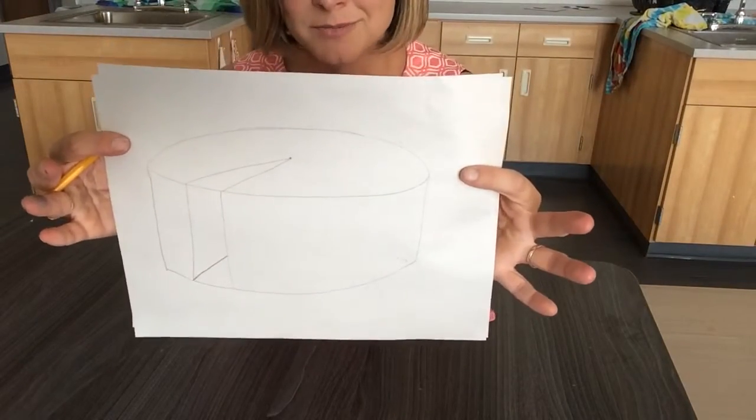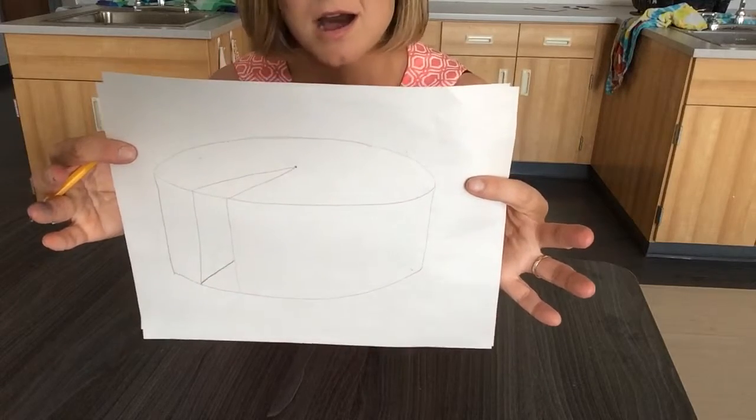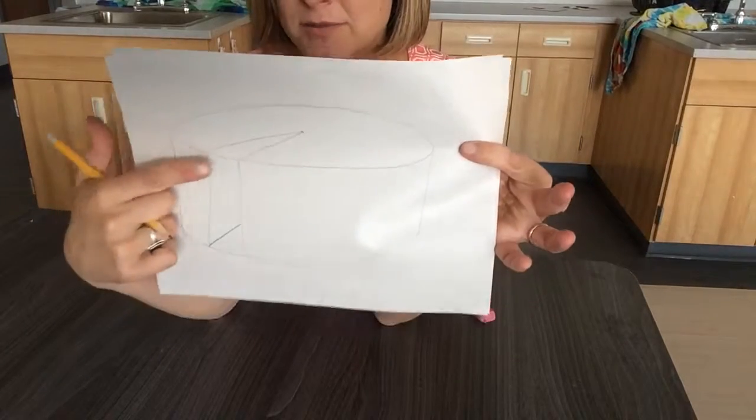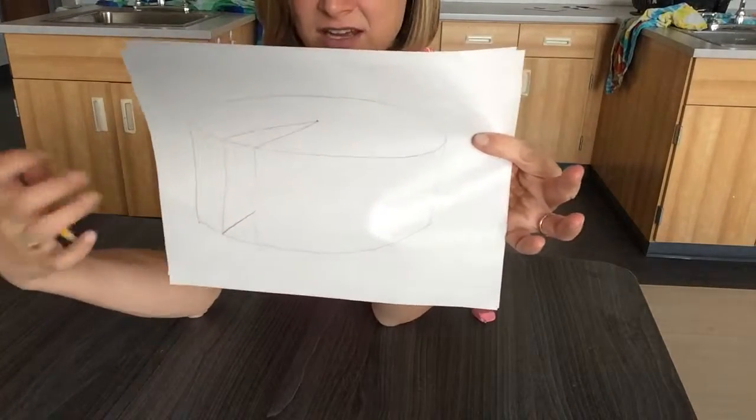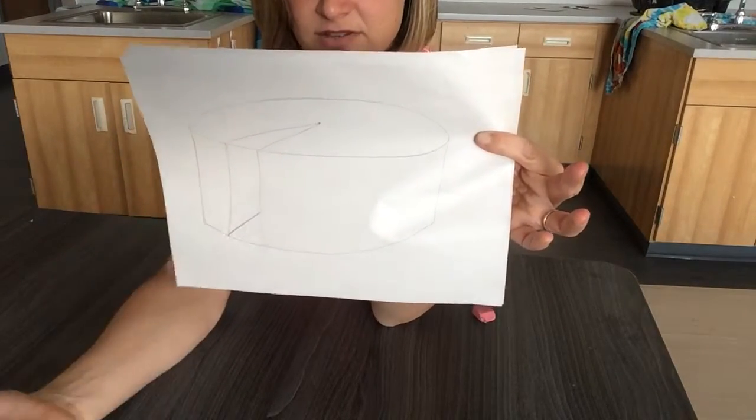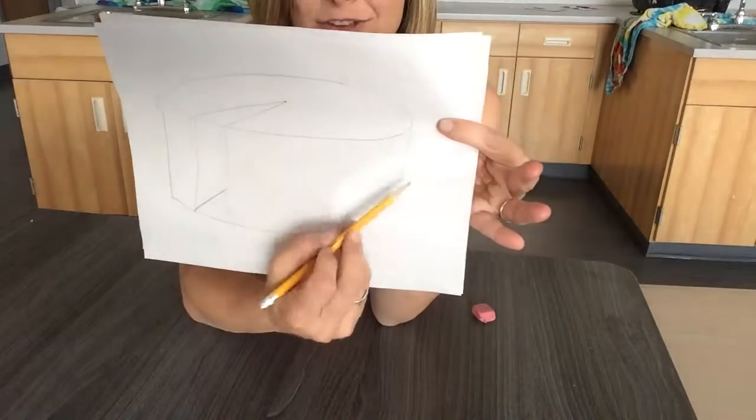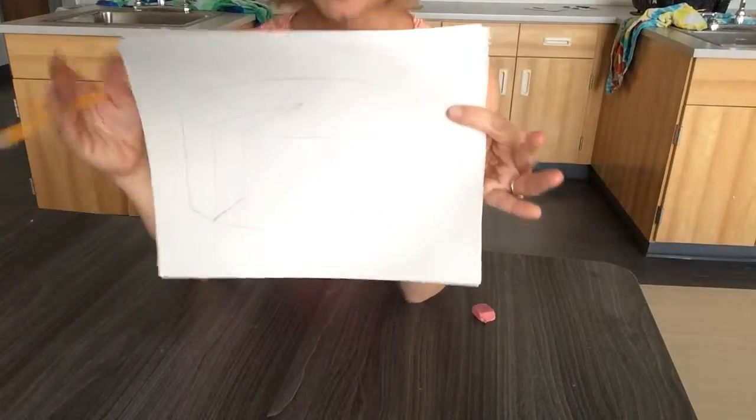Alright, so now I'm going to erase these lines here because it doesn't make sense - the cake slice is gone. I need to erase these lines, we don't see those. And then I'm going to add another ellipse to make my cake plate.